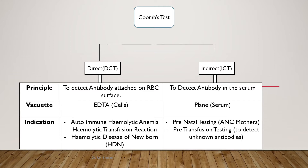The basic principle of the Coombs test is to detect antibody. In the Direct Coombs Test, we detect antibodies adsorbed on the RBC surface, while in the Indirect Coombs Test we detect antibodies in the serum. The EDTA vacutainer is used for DCT because we want cells, and the plain vacutainer is used for ICT as we want to detect antibody from the serum.